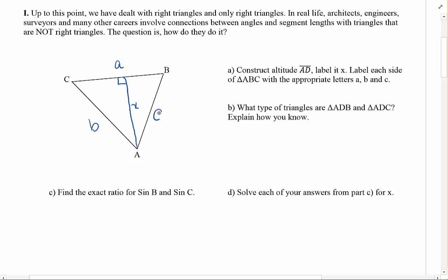What type of triangles are ADB and ADC? Well, both of them have a right angle, so they're right triangles. Duh. I'm literally writing duh. Explain how you know. Duh. There's a right angle.